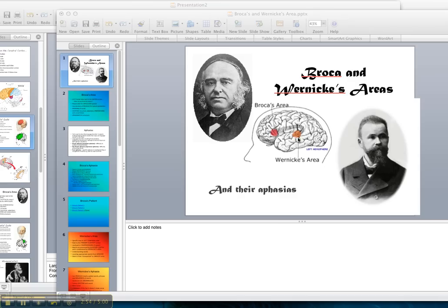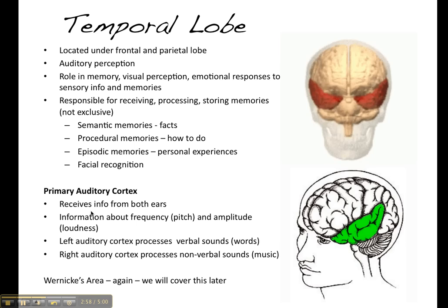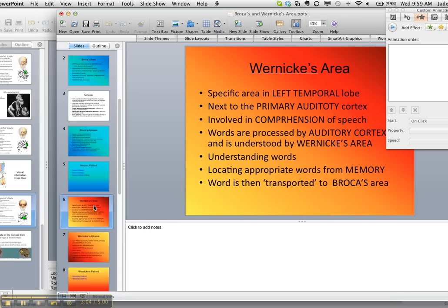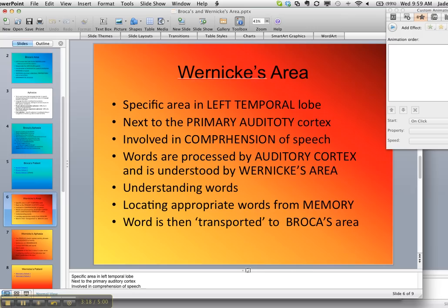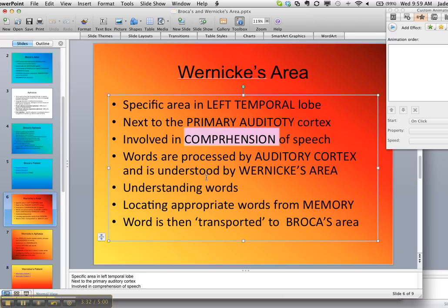Wernicke's area is actually in the left temporal lobe. It is located right next to the primary auditory cortex and is involved in the comprehension of speech — understanding what is being said. Generally, what tends to happen is that words are processed by the auditory cortex and then understood by Wernicke's area.